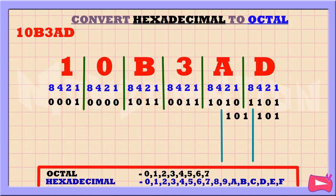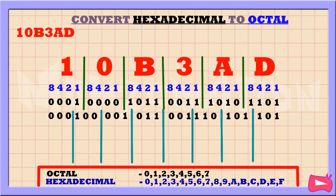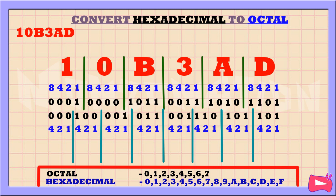Now the next step is to separate these binary numbers into groups of 3, starting from the right. Then let's write down 4, 2, and 1 underneath each set of 3 binary numbers. Then add up each set of 3, starting from the right, adding the numbers that correspond to binary digits of 1.